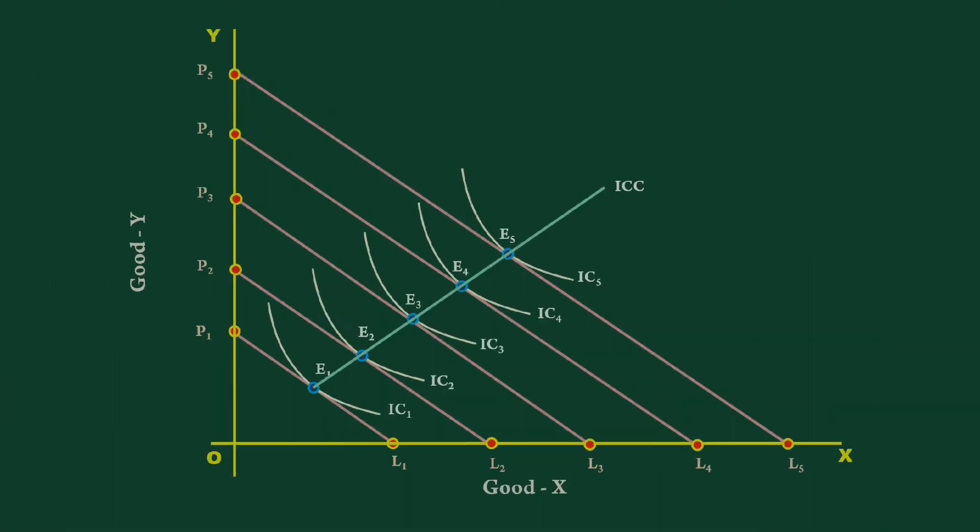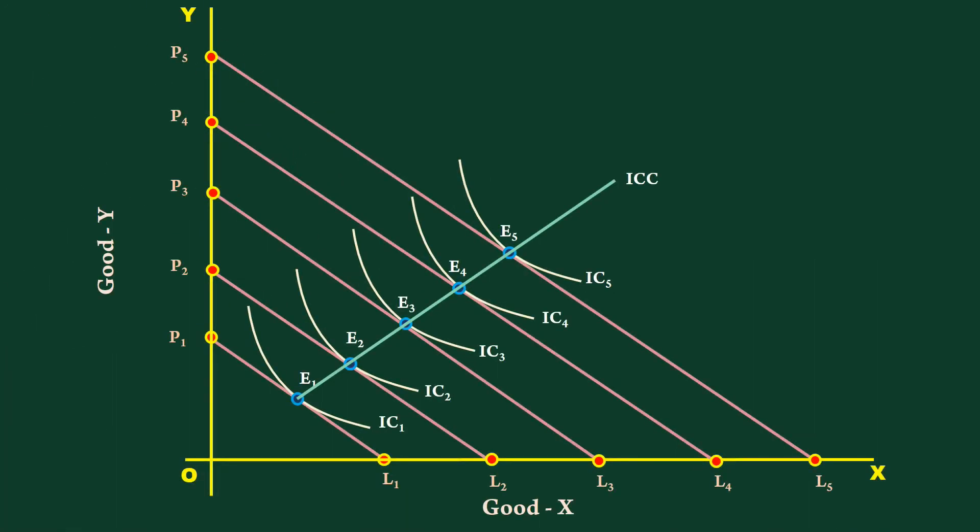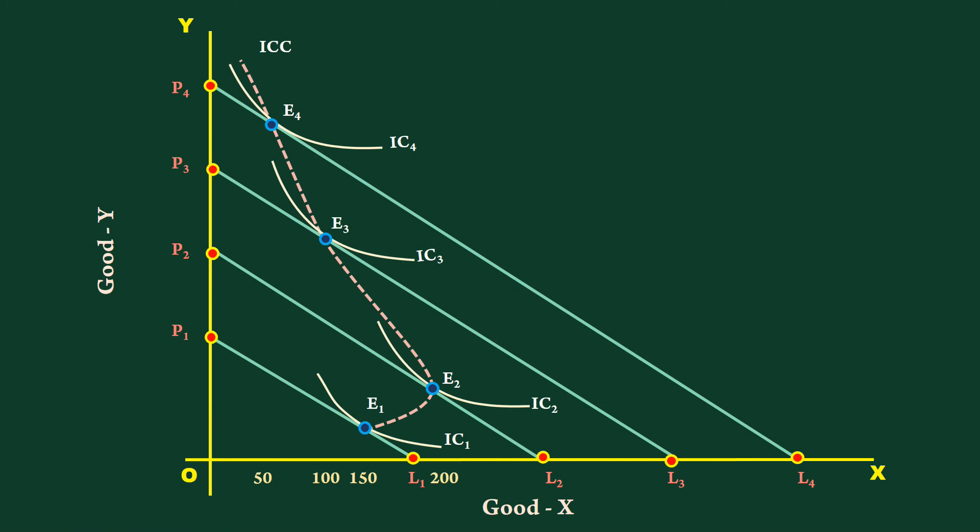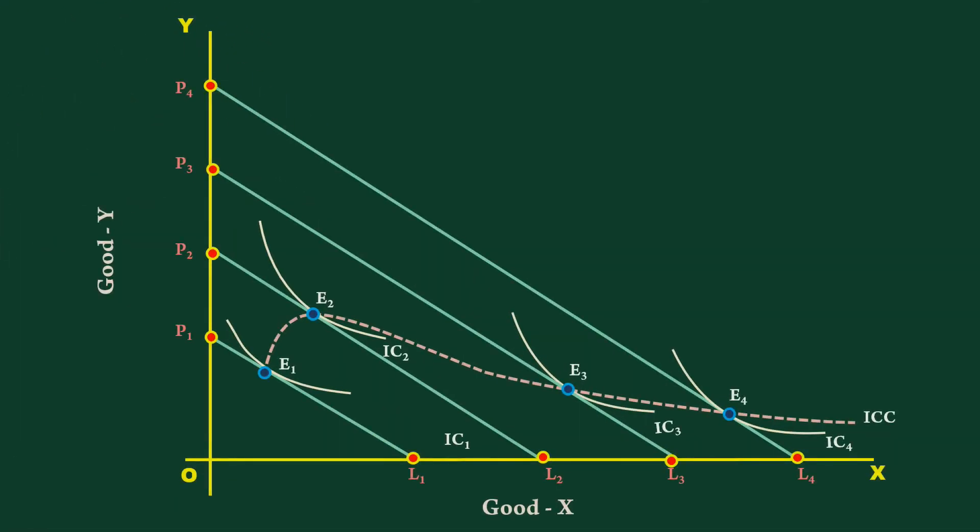One: Income consumption curve slopes upwards, both goods are normal. Two: Income consumption curve bends backward towards Y axis, good X is inferior and good Y is normal. Three: Income consumption curve bends downward towards X axis, good Y is inferior and good X is normal.